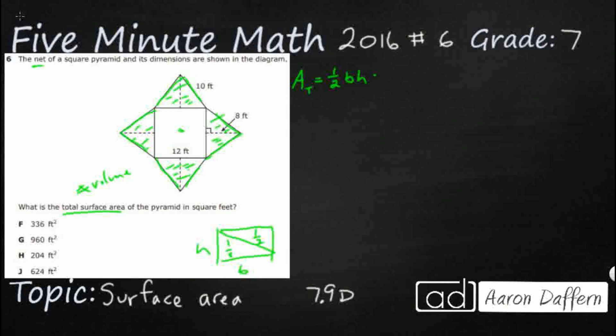So, one-half base times height. Now my base—they've actually given us the base here as the side length of one of my squares. So one-half times 12, and then I've got two different measurements. That's the only quote-unquote trick with this one.